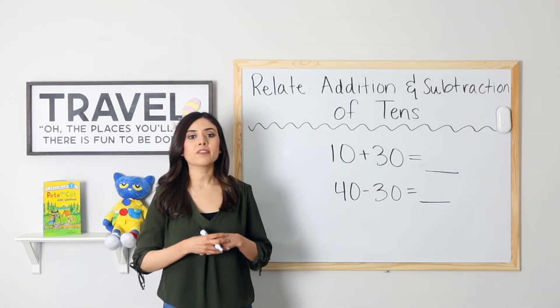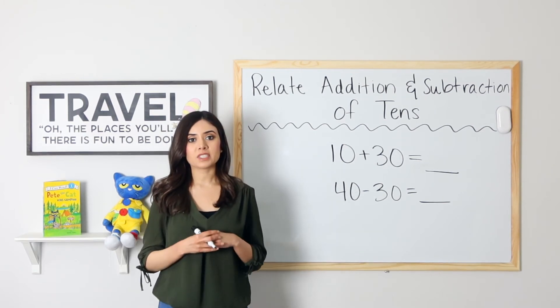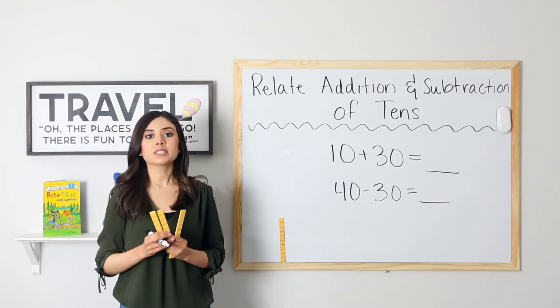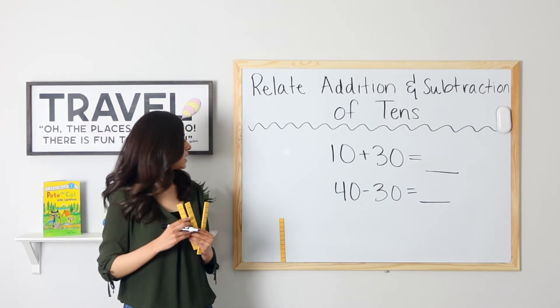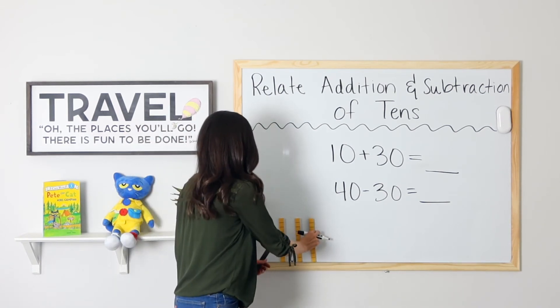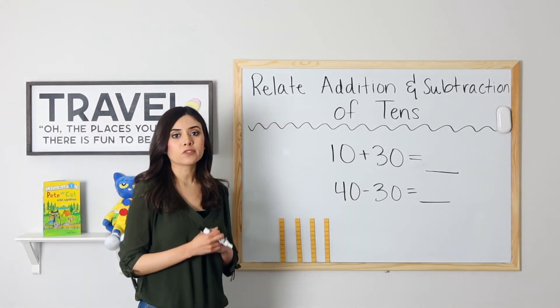Last example. I have 10 plus 30. What is 10 plus 30? So I have 10 units up here. I'm going to add 30 more and see what I end up with. 10, 20, 30, 40. 10 plus 30 equals 40.